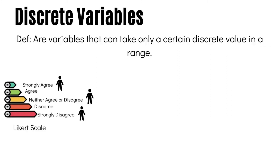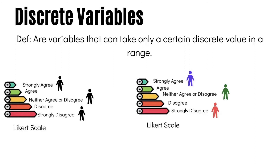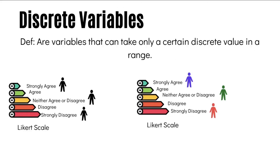Different participants can have different ratings: participant A can say strongly agree, B can say neither agree nor disagree, and C could say strongly disagree. Because responses on the Likert scale can only take certain discrete values over the given interval, we refer to Likert scale responses as a good example of a discrete variable.